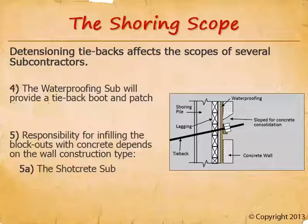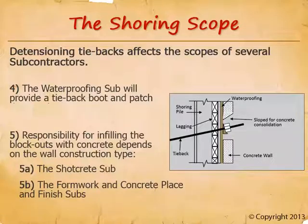After the tiebacks are detensioned and the ends cut off, the waterproofing subcontractor will come back to place a rubber boot shaped like a top hat over the head and patch the membrane to it. Responsibility for infilling the blockouts depends on the wall construction type — it could be by the shotcrete subcontractor for a shotcrete wall, or by the formwork and place-and-finish subcontractors for a cast-in-place concrete wall. When these guys come back to infill the blockouts, the building construction will have progressed quite a ways along, and you may even have finishes in place. Make sure each sub is responsible for protection of the path of travel between the building entrance and their work at each individual blockout.